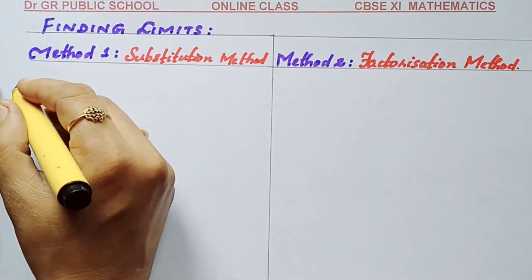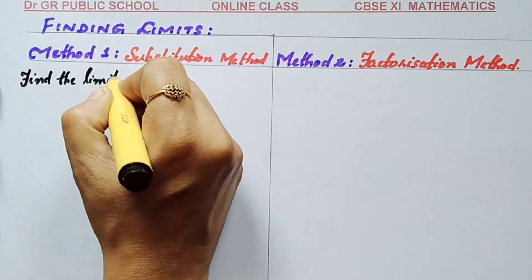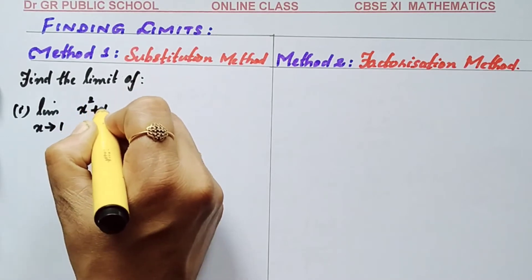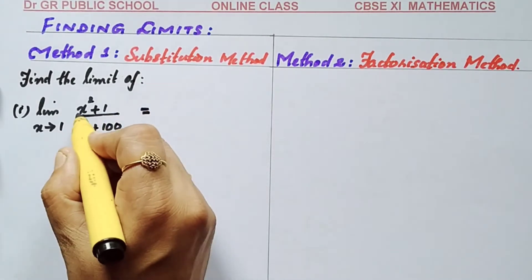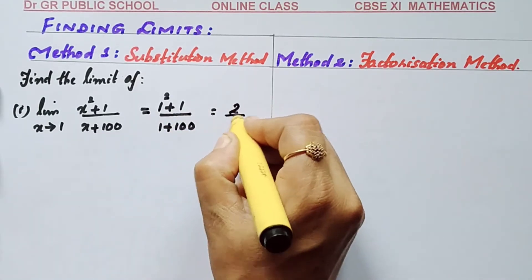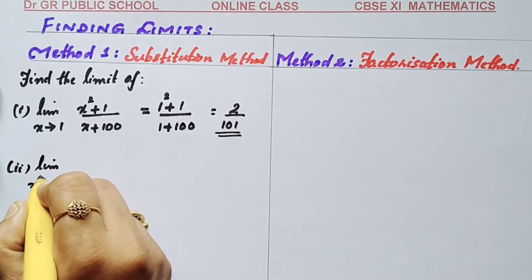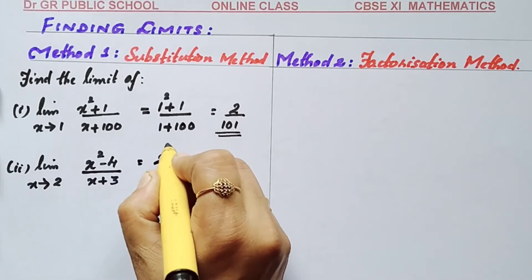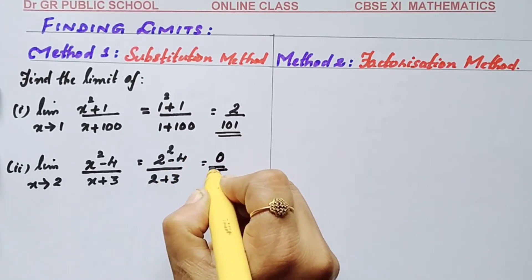Now we are going to do some problems. The first method is the direct substitution method. First question: limit x tends to 1 of (x squared plus 1) divided by (x plus 100). Substituting x as 1: 1 squared plus 1 divided by 1 plus 100 equals 2 divided by 101. Second question: limit x tends to 2 of (x squared minus 4) divided by (x plus 3). Substituting: 4 minus 4 divided by 5 equals 0.